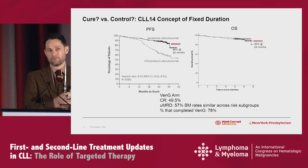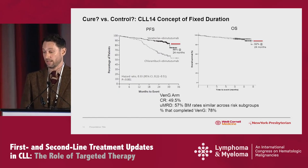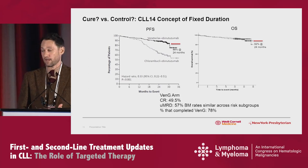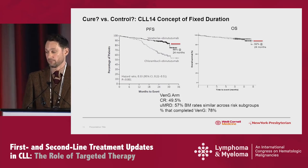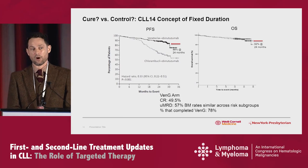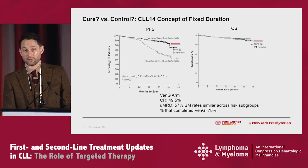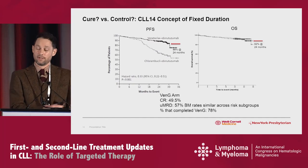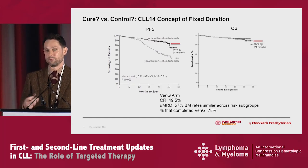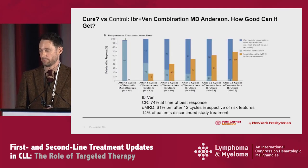Now we're shifting back to potential cure — giving therapy, stopping treatment, and letting patients ride. CLL14 was one year of treatment and everyone stopped regardless of response, now being followed. At two years — one year off therapy — PFS is very similar to the Alliance study at 88%, overall survival very similar. Importantly, 57% of patients in the intent-to-treat population receiving venetoclax-based treatment were undetectable by bone marrow MRD, similar across risk groups. Close to 80% were able to complete all 12 cycles.